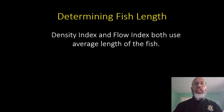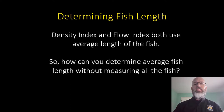In previous videos, we've talked about calculating density index and flow index, and both of these use average length of the fish in the calculations. So the question is: how do I determine the average length of my fish without getting out in the raceway and measuring all the fish?